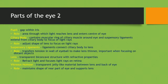The lens is a transparent biconvex structure with refractive properties. Its role is to refract light and focus the light rays on the retina at the back of the eye. The vitreous humour is a transparent jelly-like material between the lens and the back of the eye, and its role is to maintain the shape of the rear part of the eye and also to support the lens.